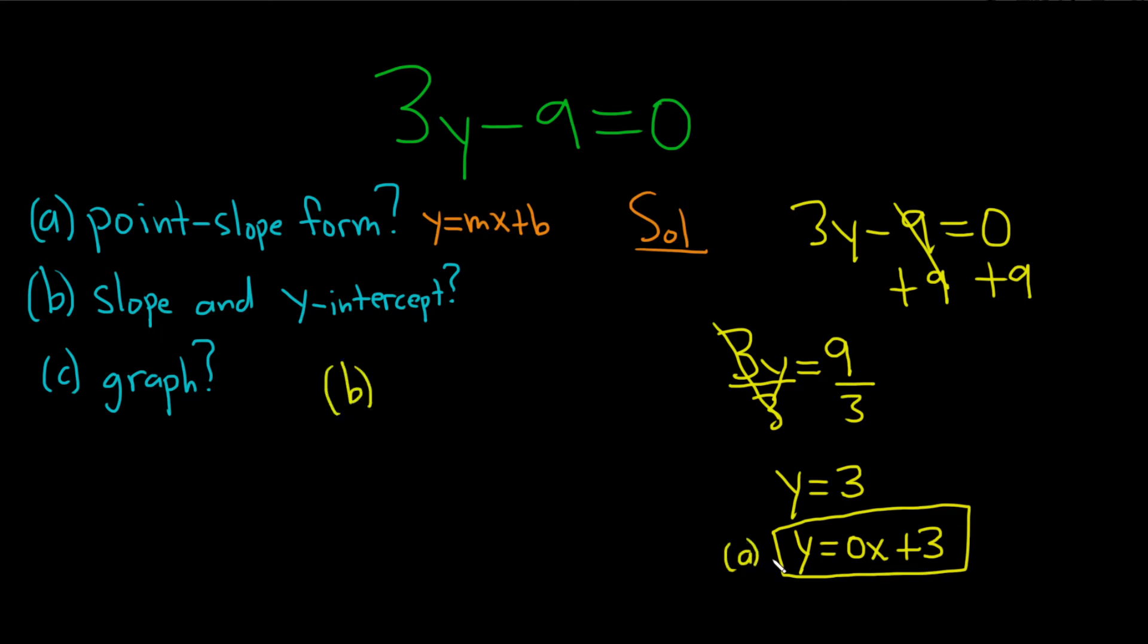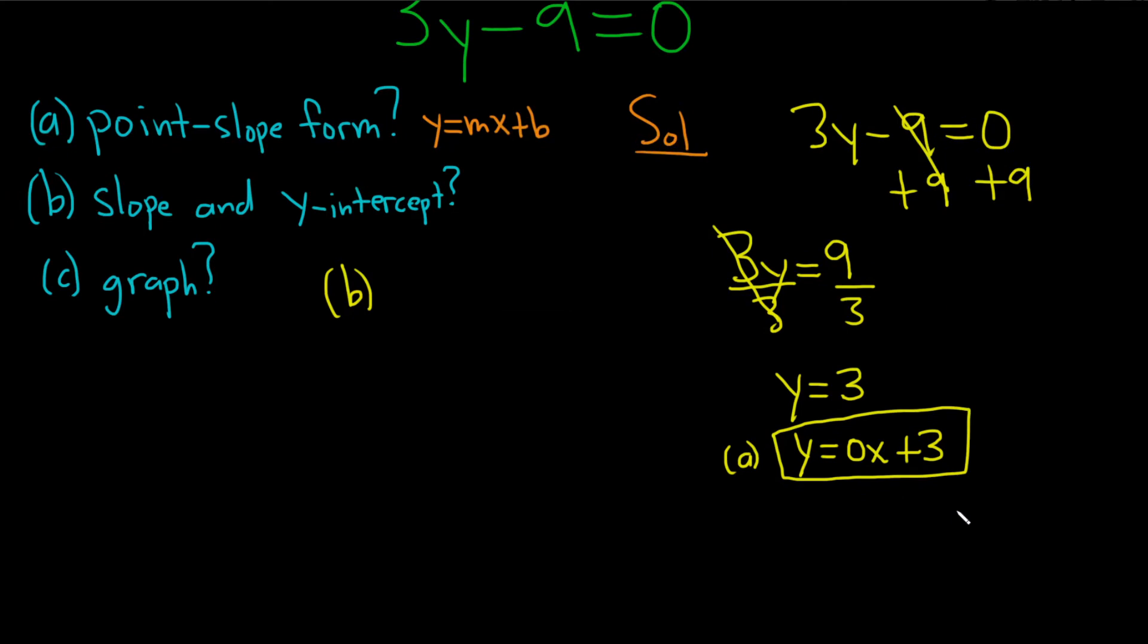For part b, we can just use matching. Remember, this is now in the form y equals mx plus b. So you see the slope here is 0. So m is equal to 0. And that's the slope. The slope is equal to 0.